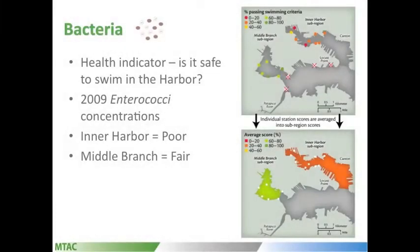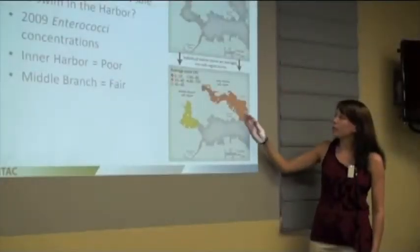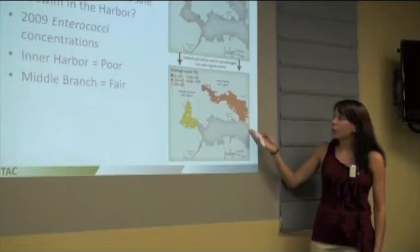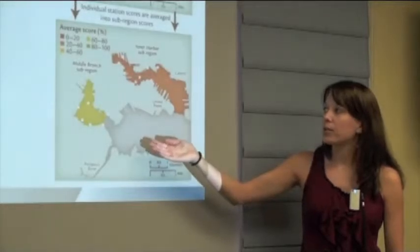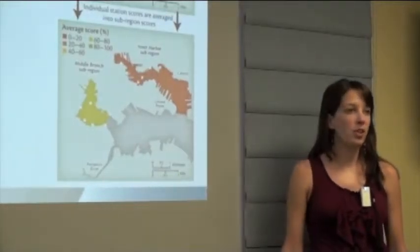So bacteria: this indicator answers the question, is it safe to swim in the harbor? We looked at 2009 enterococci concentrations - that's the indicator bacteria we use in salt water systems. There's actually a great sampling program already being done by the water keeper program in Baltimore. These are their station averages - I averaged them over the entire season and then averaged those averages into an overall inner harbor sub-region score, which is poor. Actually the middle branch looks better than the inner harbor and scored a fair, which is one of our best grades.